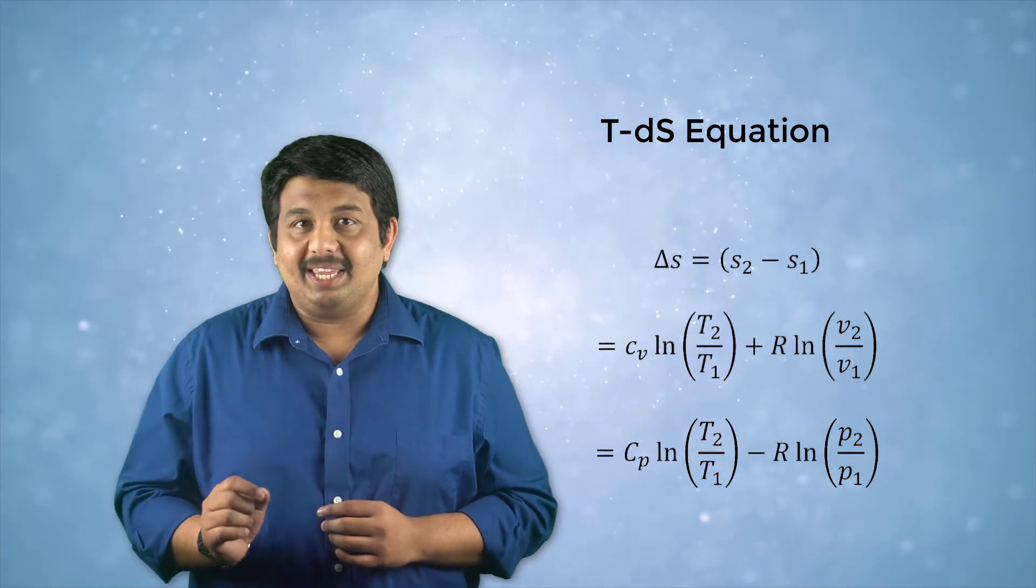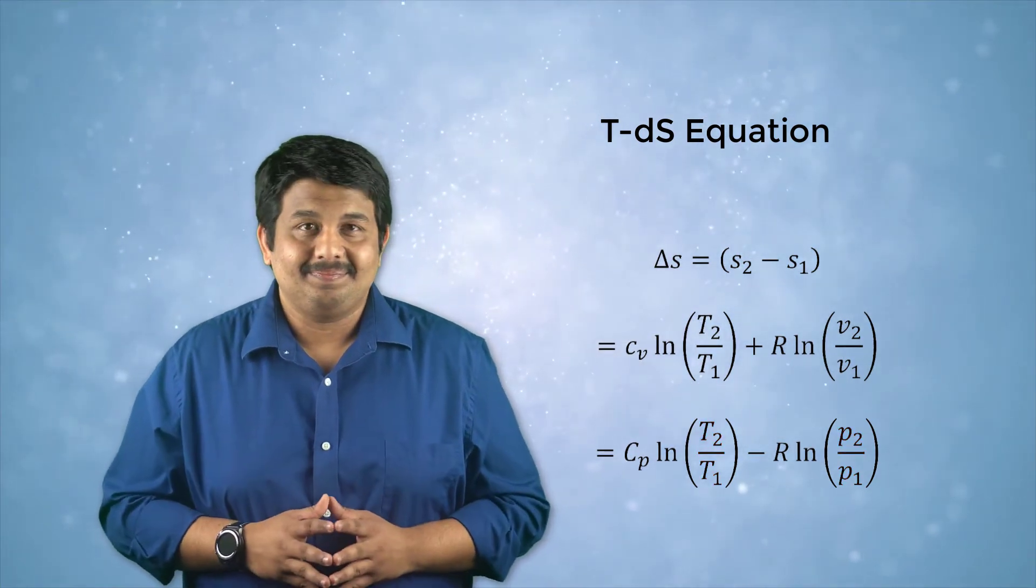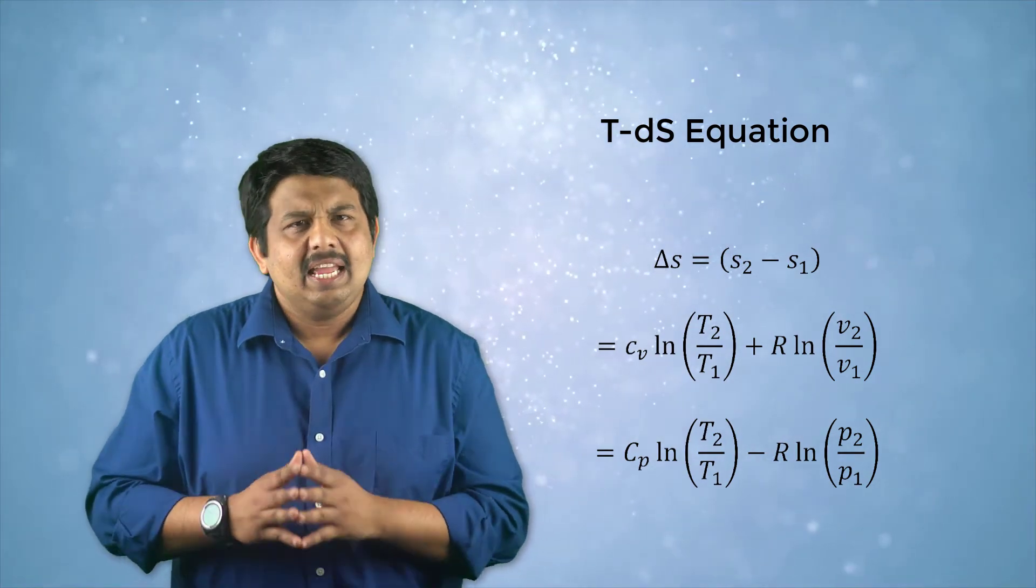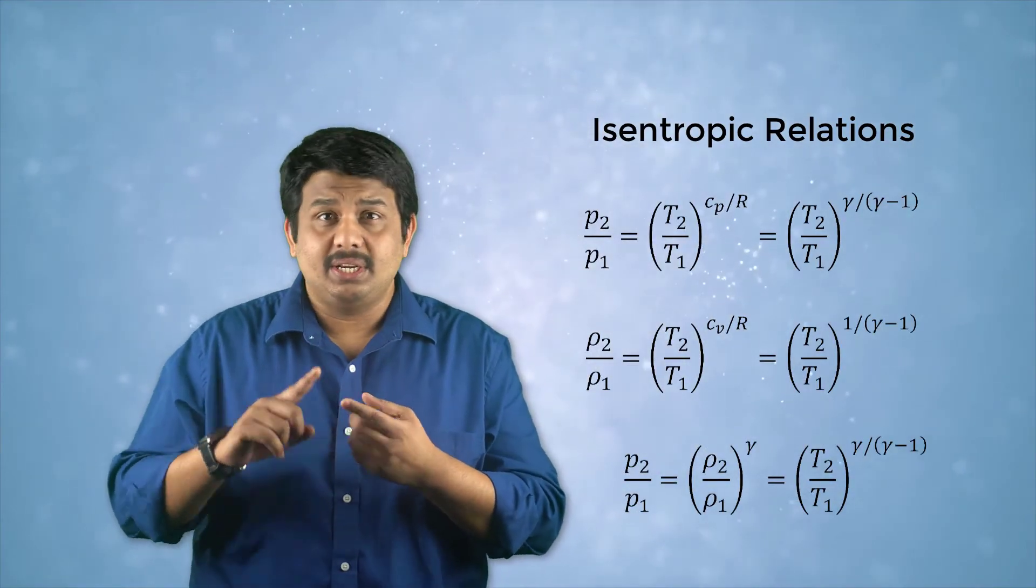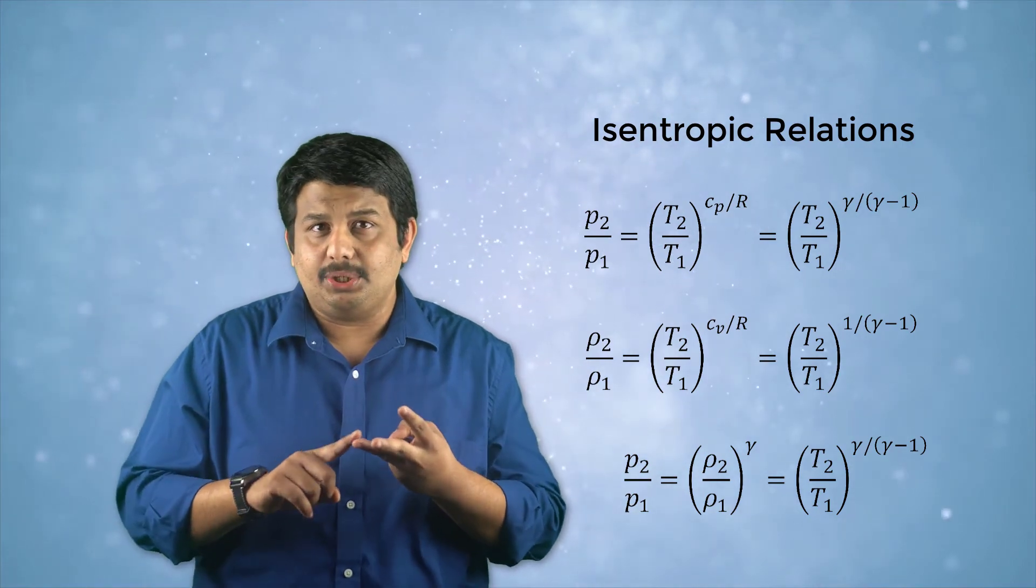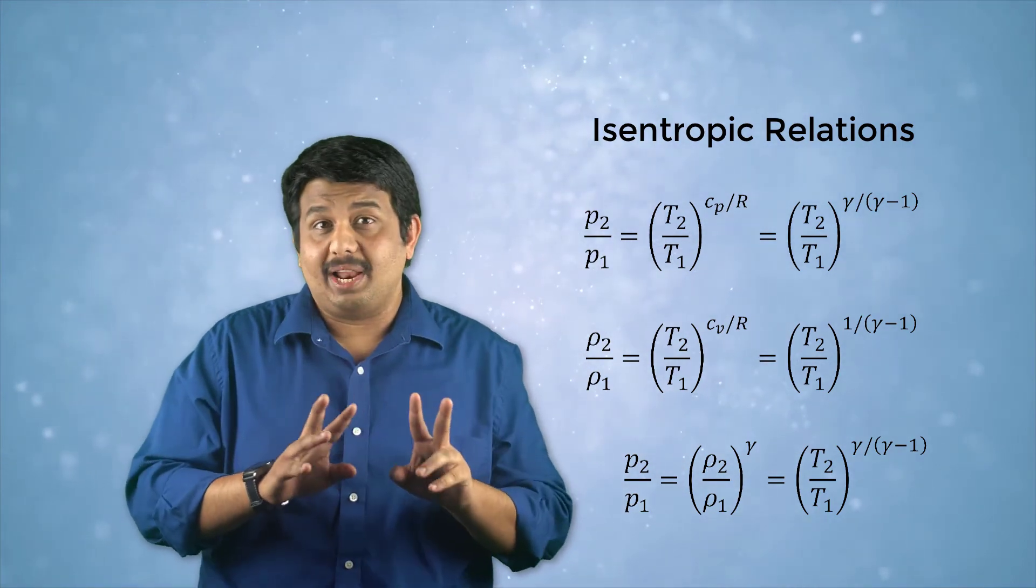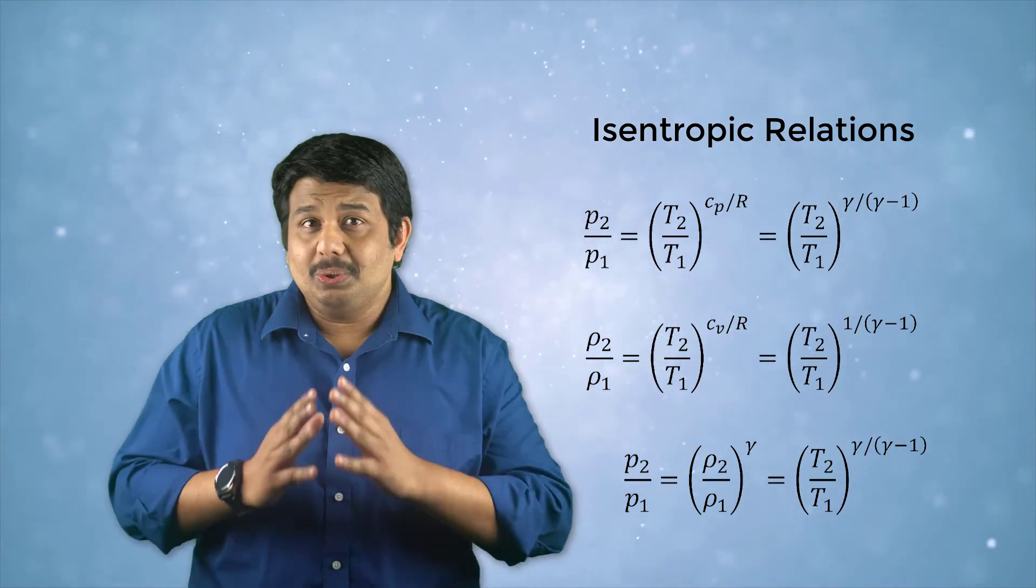For an isentropic process, change in entropy is equal to zero. Substituting this result in the entropy equation, we can obtain very useful relations that help us compute pressure ratios, density ratios, and temperature ratios between two thermodynamically different states. Using these equations, we can compute the state variables of a system undergoing an isentropic process.